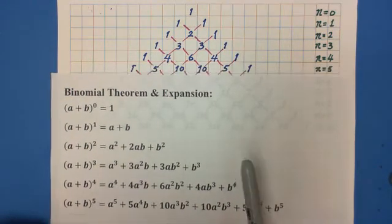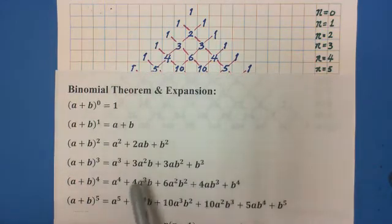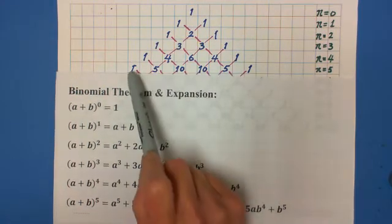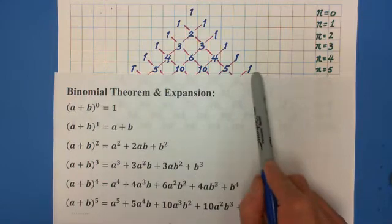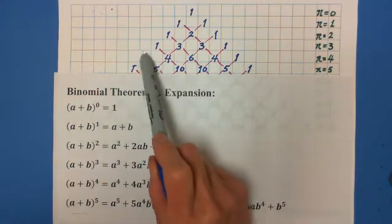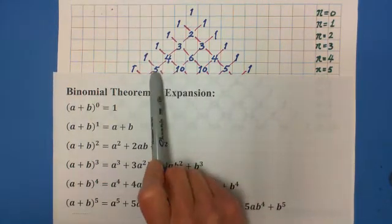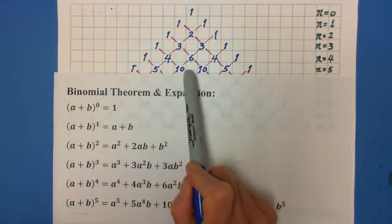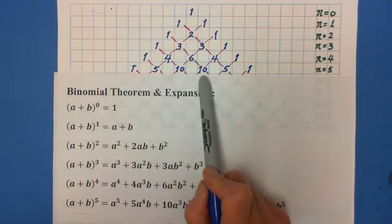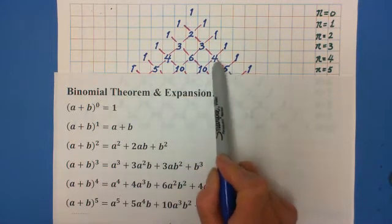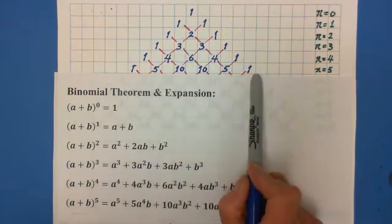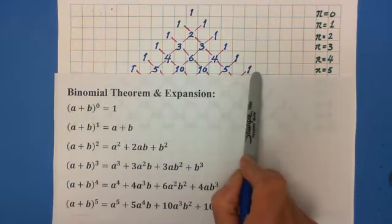If n equals 5, the row is 1, 5, 10, 10, 5, 1. The first and last are 1. The second one is 1 plus 4 equals 5. The third one is 4 plus 6 equals 10. The fourth one is 6 plus 4 equals 10. The fifth one is 4 plus 1 equals 5. So you can keep going — I have built this up to n equals 10.